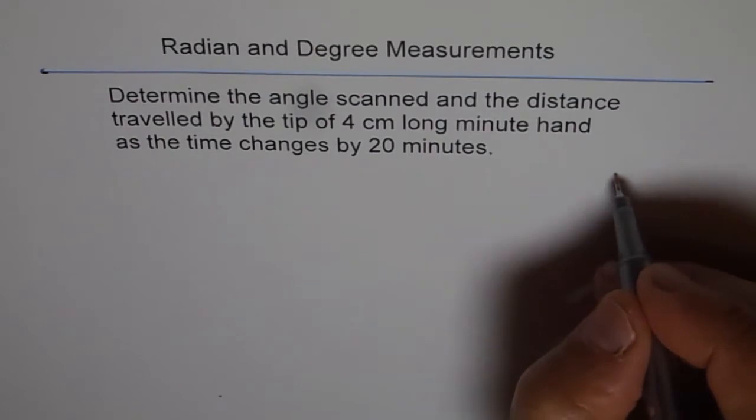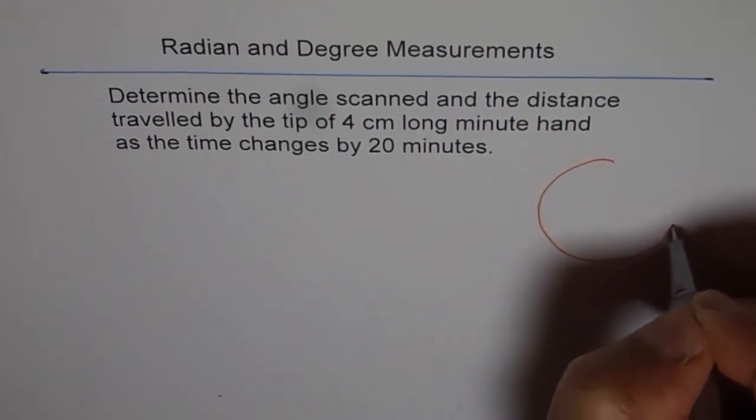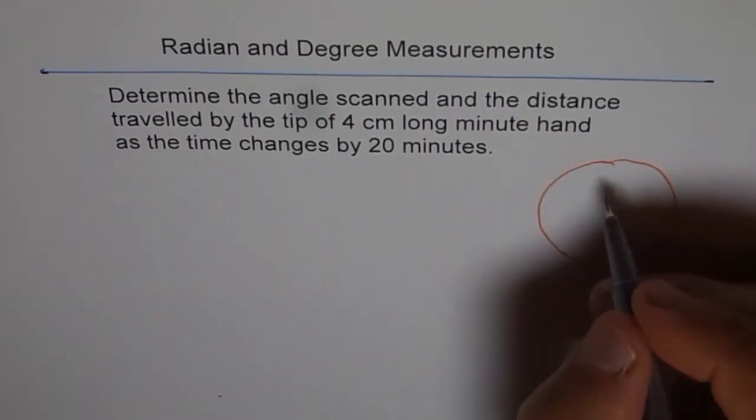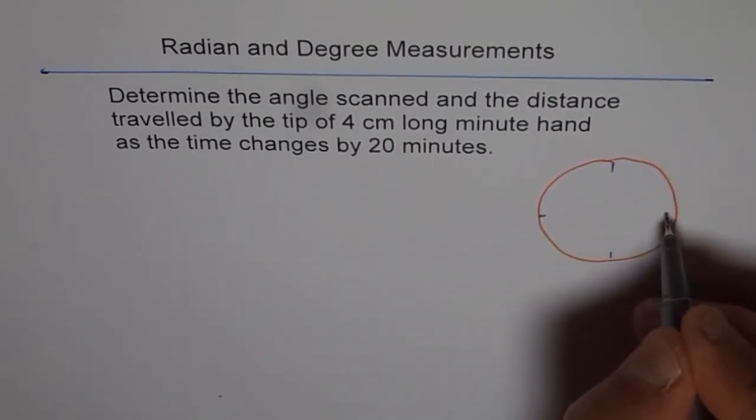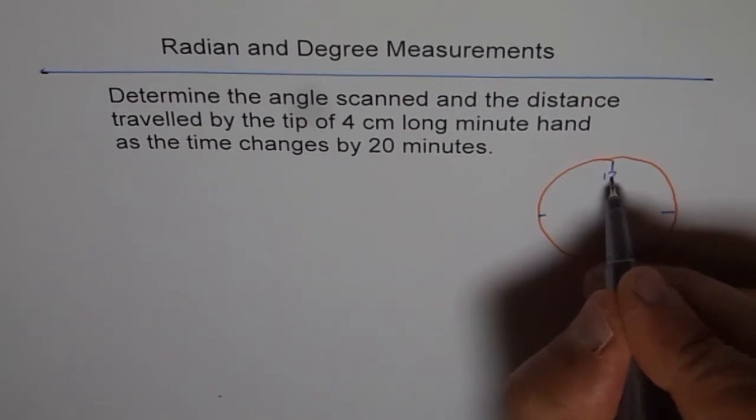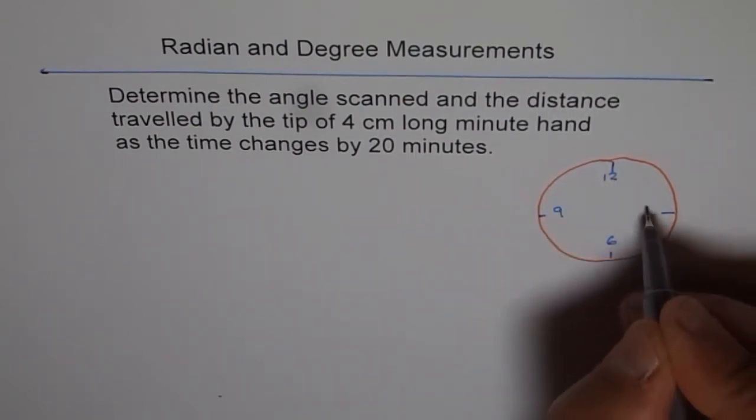Let's look into this. Let's draw a clock. This is 12 and this is 6. This is 9 and 3. Let me write 12 here. 6, 9 and 3.